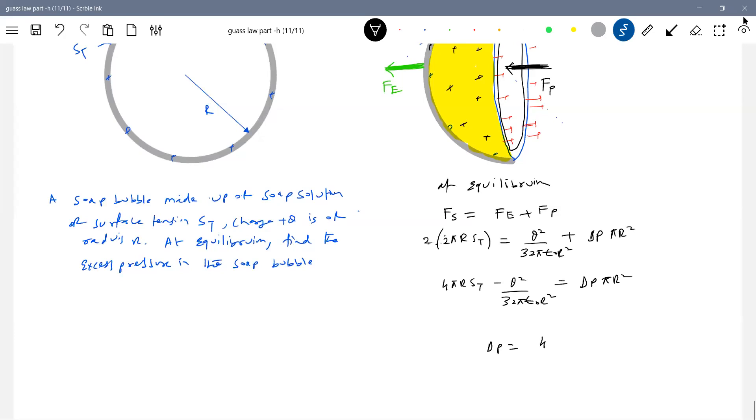So the excess pressure is given by, pi gets canceled. So 4 ST by R minus Q square by 32 pi epsilon not R to the power 4. 32 pi square, 32 pi square. So one square is missing.